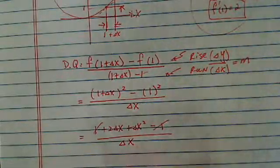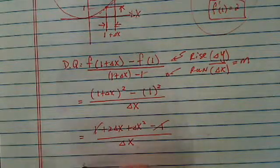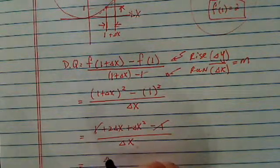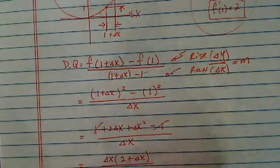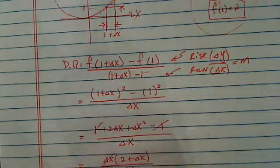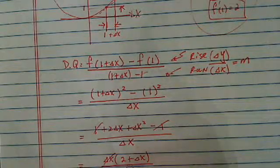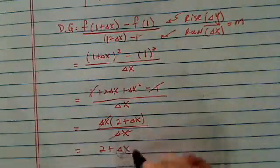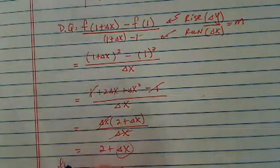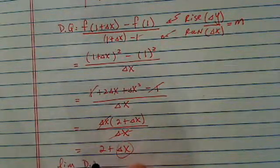So all I'm doing is copying it out. And then from here, I have delta x times (2 plus delta x) over delta x. This cancels. So I have 2 plus delta x.